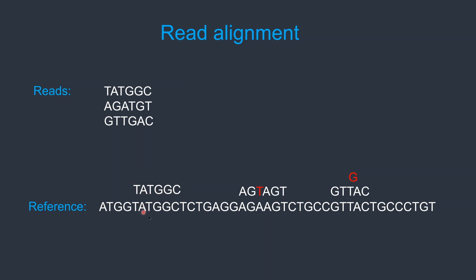The alignment algorithm tries to find the best possible alignment location or the best possible match of a read with the reference genome, and for that it can scan the entire genome to find the best match. The algorithm needs to be efficient because next-generation sequencing technologies generate millions of reads, and aligning millions of reads to a reference genome could take a long time and require high computation if they are not efficient.